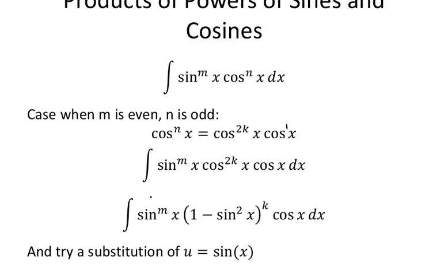That gives you u to the m power, the cosine out front represents the du, and inside you'll have 1 minus u squared to the k power — whatever k happens to be equal to.